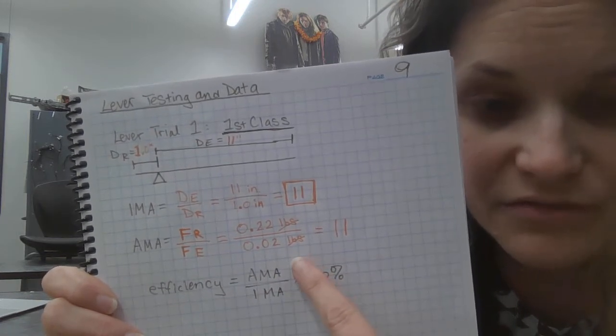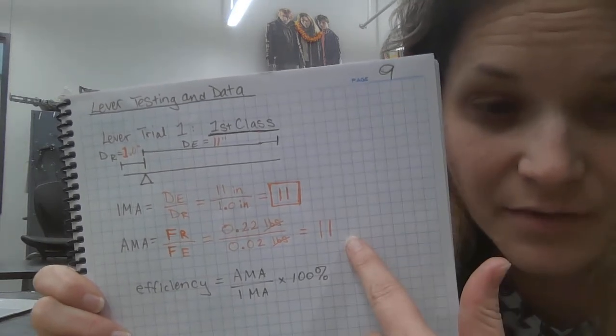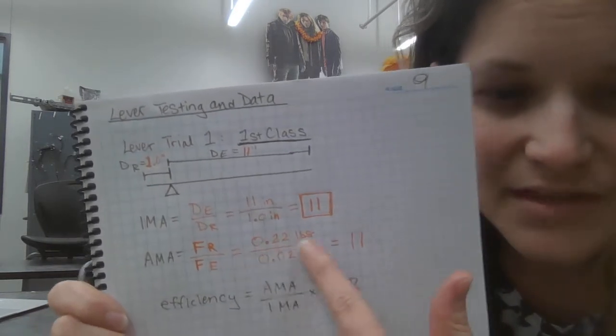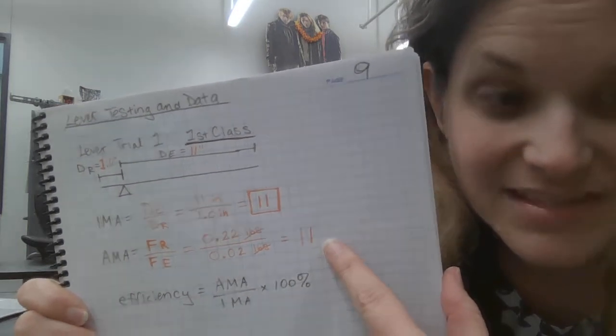So 0.22 divided by 0.02 is actually 11, the same, but I wasn't able to be as precise with these values. So I'm going to have to round that to one sig fig, that's 10.